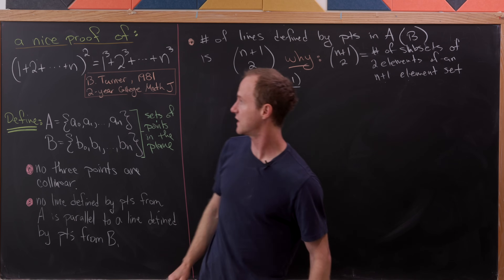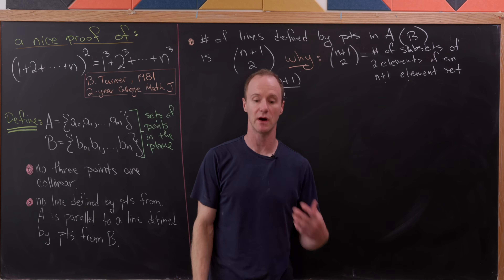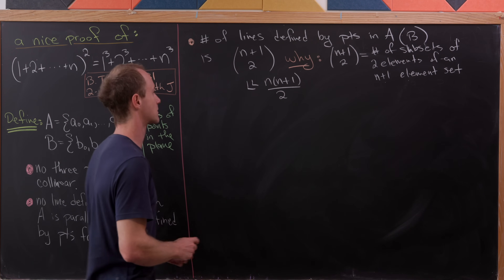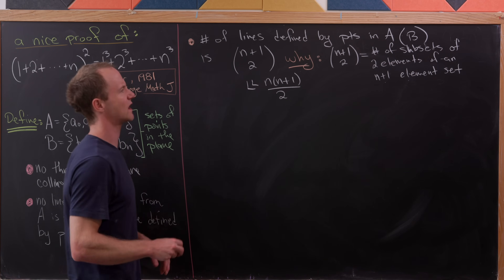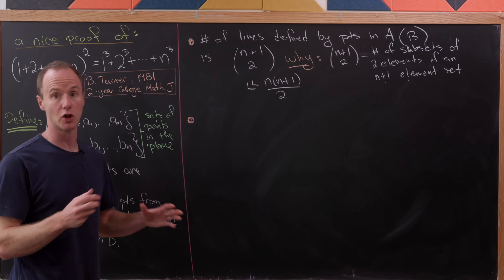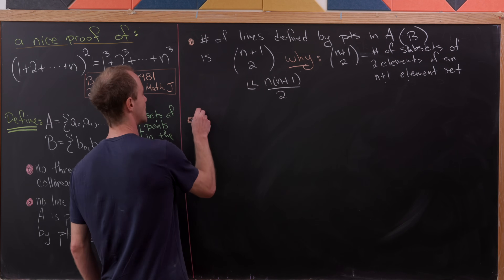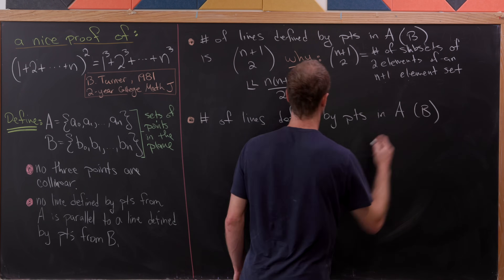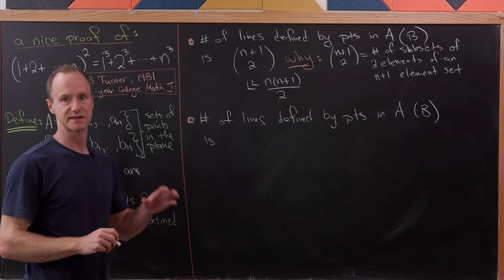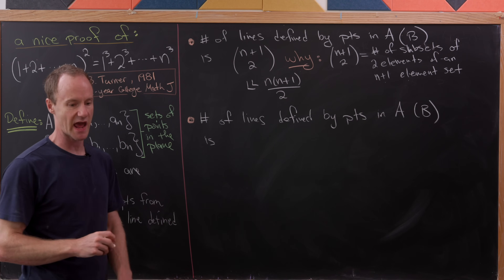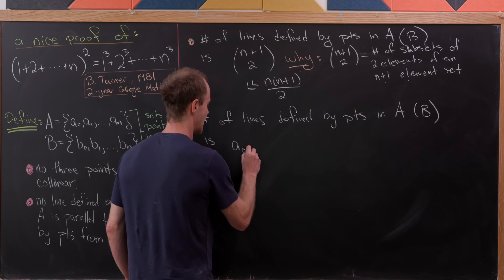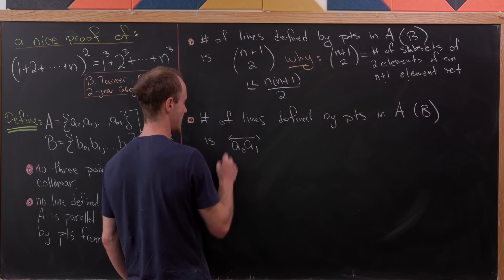If you know anything about the sum one plus two up to n, this object should be familiar. Let's also count the number of lines another way, and that will give us the closed formula. The number of lines defined by points in A, or equivalently B, equals one plus two plus three up to n.